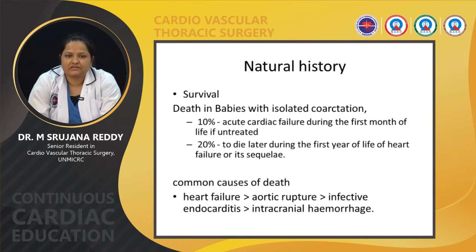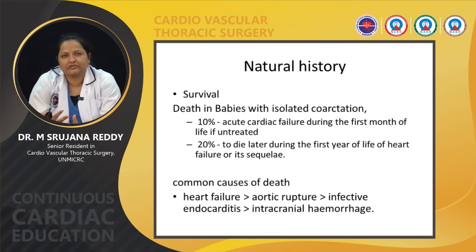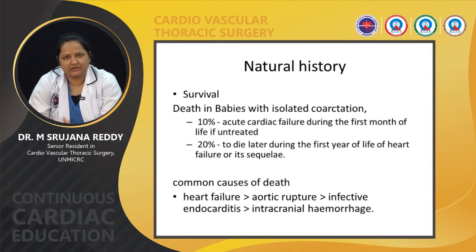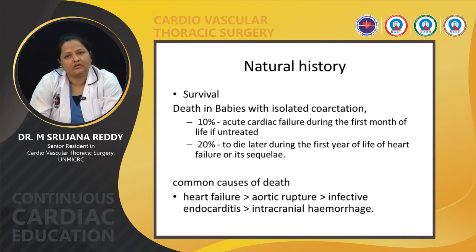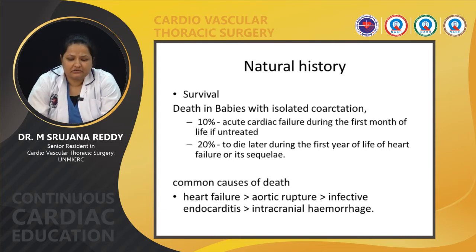Coming to the natural history and survival, in babies with isolated coarctation of aorta left untreated, 10% suffer acute cardiac failure during the first month, and 20% die within the first year of life due to heart failure or its sequelae. The most common cause of death is heart failure. Other causes include aortic rupture due to aneurysm formation, infective endocarditis, or rarely intracranial hemorrhage due to berry aneurysms associated with coarctation.